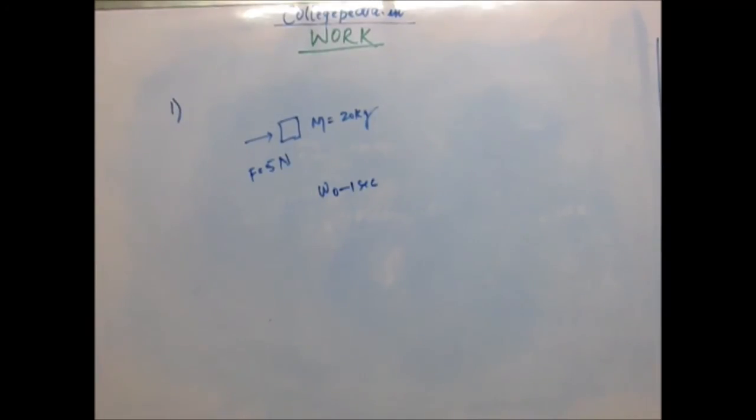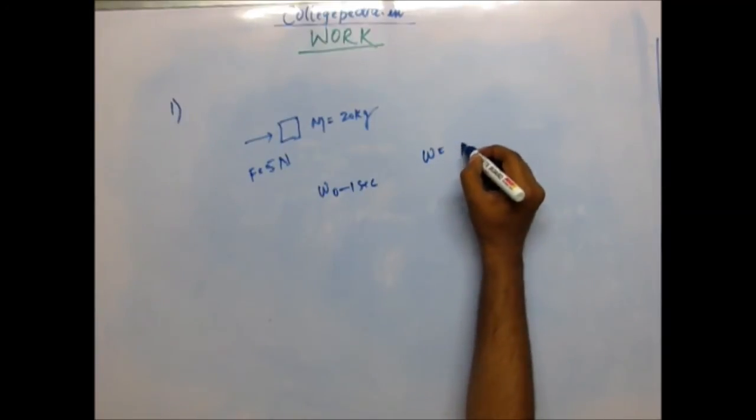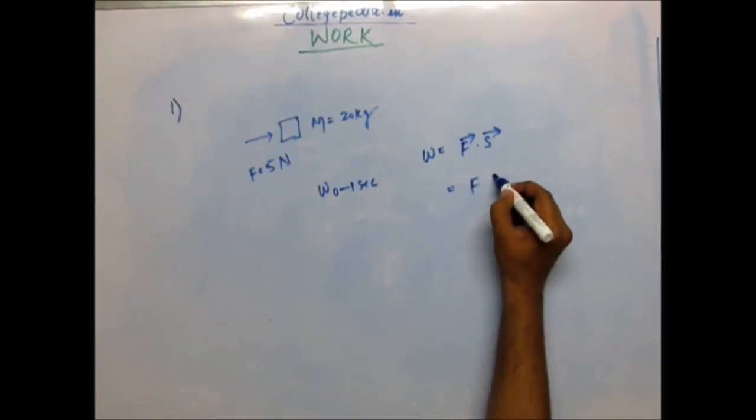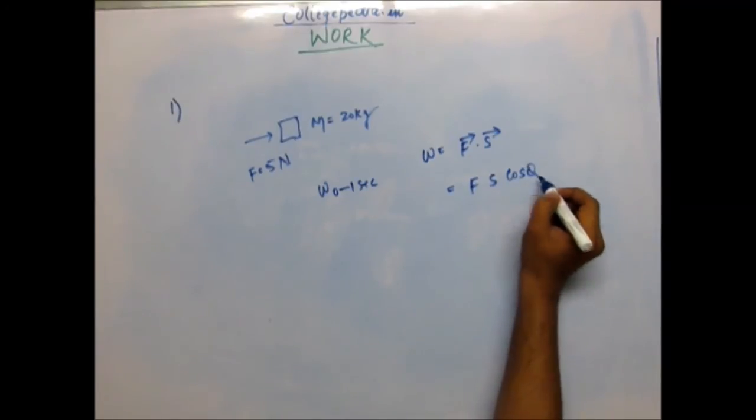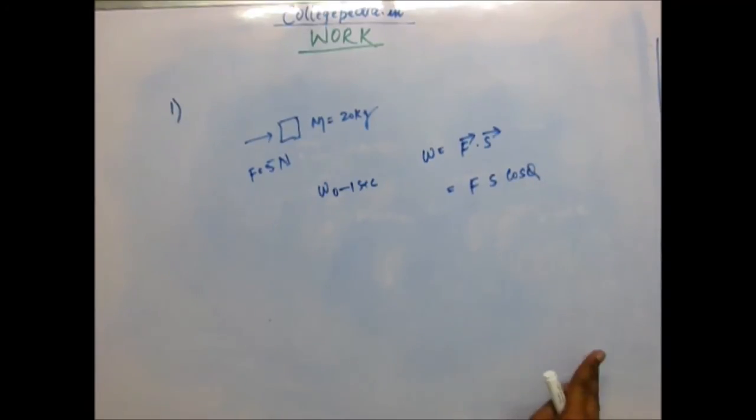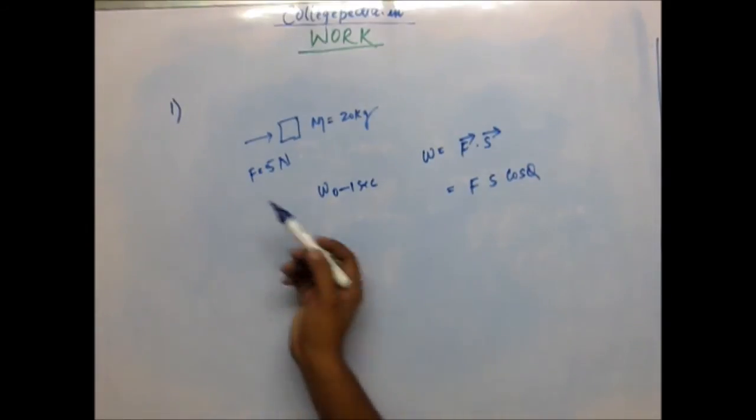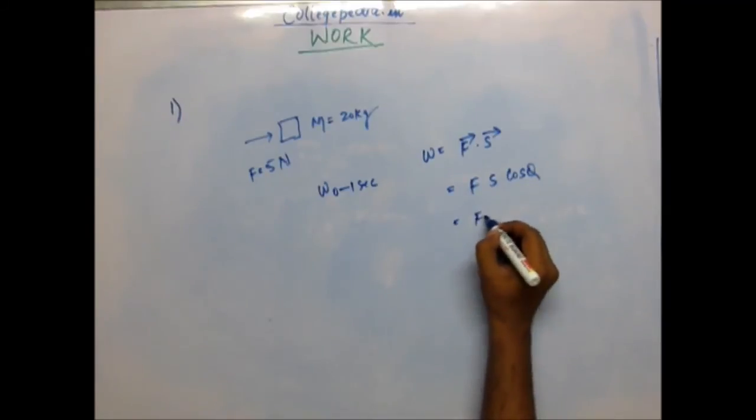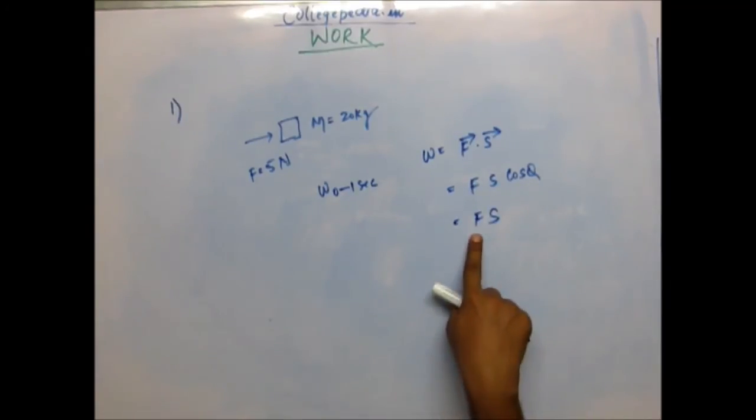Now how do you start? You start from the formula of work, that is how you start. Work is F vector dot x vector. You will always start from here and start thinking from here: force into displacement into cos(θ), where θ is the angle between force and displacement. Now here in this case the displacement will be in the direction of the force because I've taken the force to be horizontal, so this is a very simple, easy kind of situation. The θ will be 0, cos(θ) will be 1, so work is force into displacement.